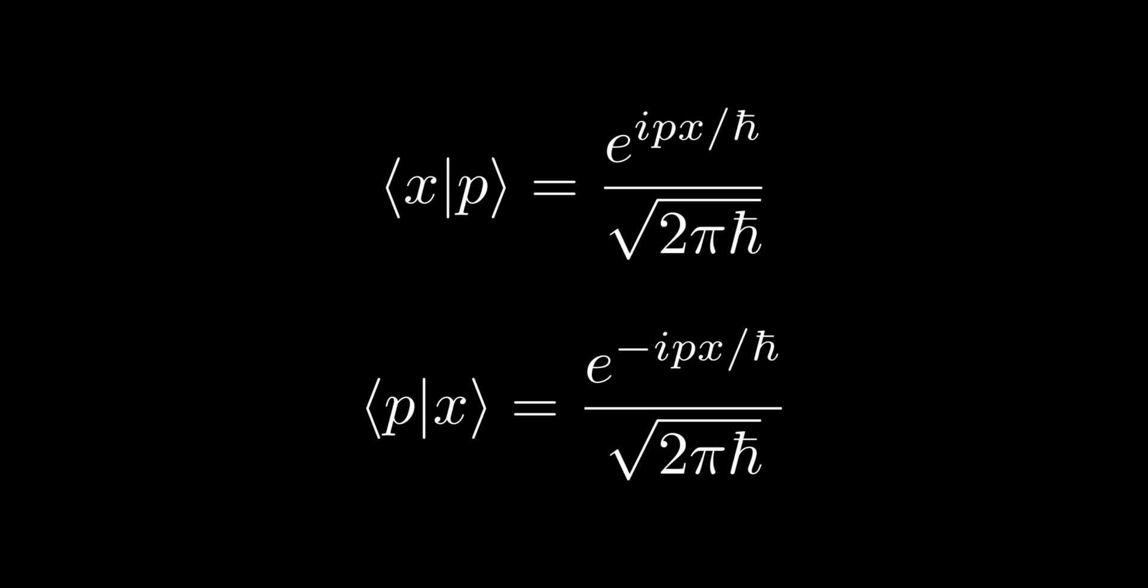Recalling the probability density function is given by the modulus square of the wave function, immediately we can tell a particle with a definite amount of momentum is equally likely to be anywhere in space, as the mod square of bra x ket p is independent of x.